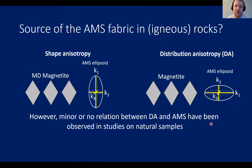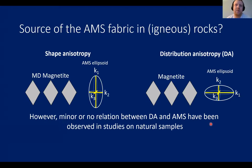However, studies on natural igneous rocks have seen very minor or no relation between distribution anisotropy and AMS, and over the last 20 years researchers have argued that distribution anisotropy is not a significant process generating AMS fabrics. However, these studies have been on rocks where magnetite crystals occur as free-floating crystals, well-separated from each other — they haven't studied rocks where magnetite crystals are closely clustered, so they haven't really looked at the right samples.